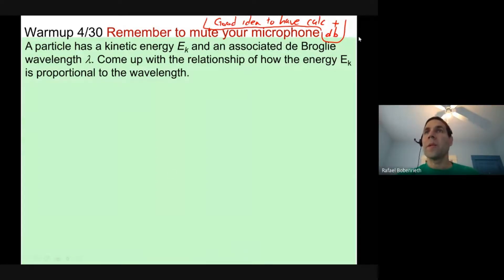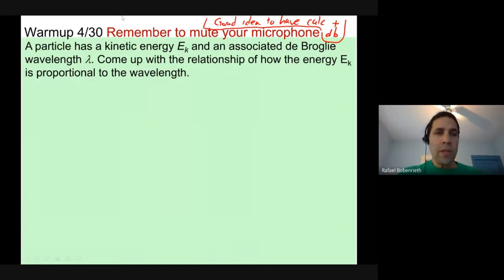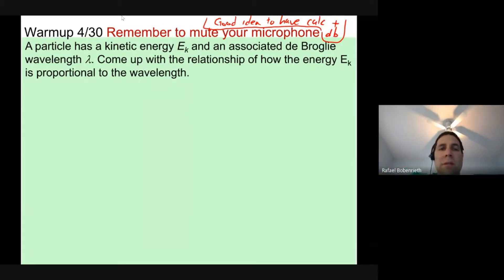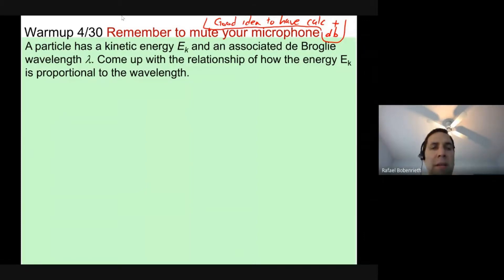The warm-up question says: a particle has a kinetic energy E sub k and an associated de Broglie wavelength lambda. Come up with a relationship for how the energy is proportional to the wavelength.